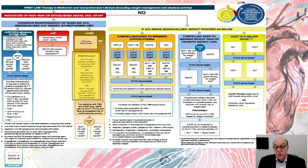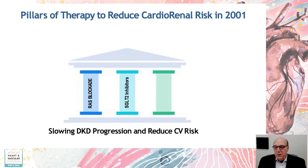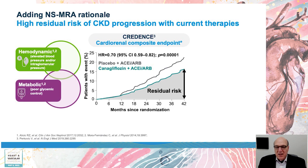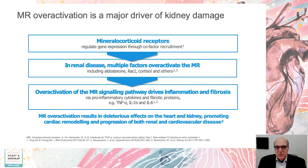We have the second pillar of therapy — SGLT2 inhibitors — along with RAS blockade, because all these studies were done on background RAS blockade. But we still need more. The risk was reduced, but there is still a lot of residual risk. SGLT2s really do nothing to blood pressure, and we still had a lot of inflammation that we needed to deal with.